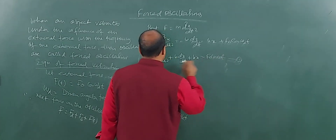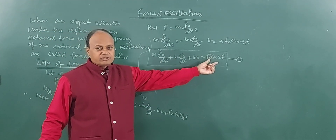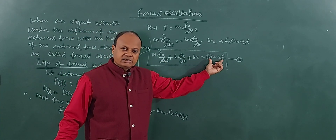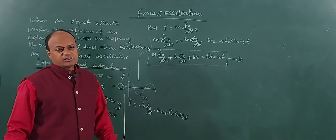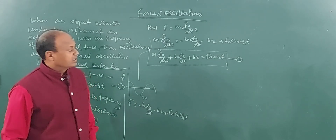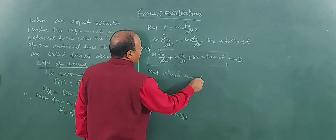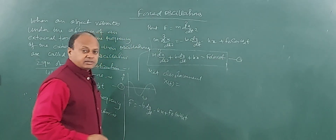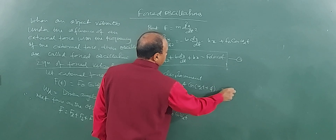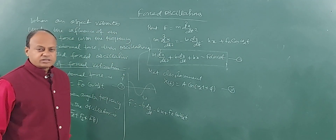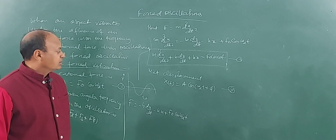Remember: in damped oscillations, the right-hand side was zero; now we replace that zero with the net external force F₀ cos(ωd·t). If you solve this equation, we can calculate the net displacement of the particle, which will be a function of time: x(t) equals A cos(ωd·t + φ), where φ is the phase difference that develops between the original vibrations and the vibrations forced by the external source.